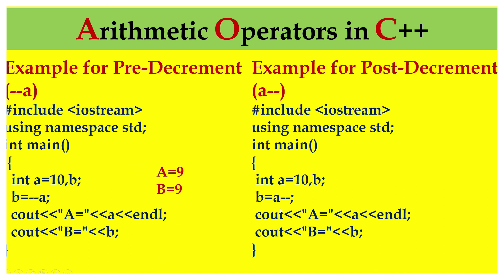On the other hand, we have integer A equal to 10 and declared one more variable B. Then we assign B equal to A--. This means the value of A, which is 10, will be assigned to B first, and then A will be decremented by 1 — that is 10 minus 1 equals 9. So A value is 9 and B value is 10.